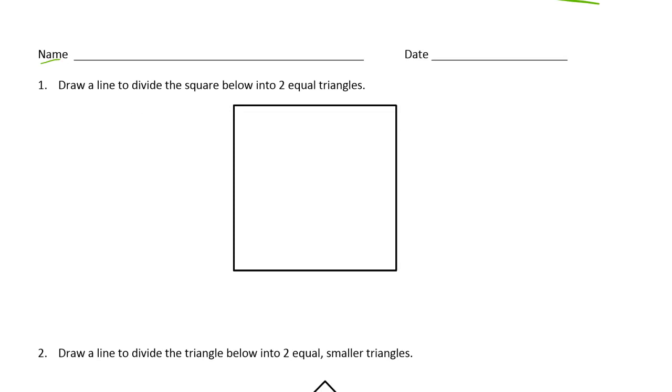Draw a line to divide the square below into two equal triangles. So that's just corner to corner. Use a straight edge.